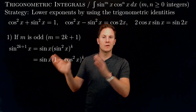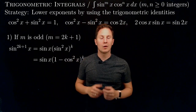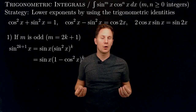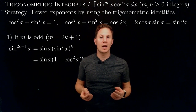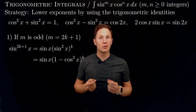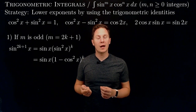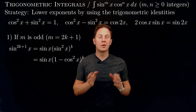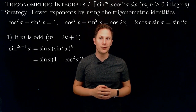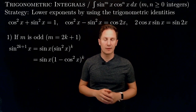Sin squared of x we can express using the identity as (1 minus cos squared x) to the k-th power. When we substitute that back into the integral, we end up with a polynomial in cos(x) times sin(x) dx. So substituting u equals cos(x) will turn that integral into a polynomial in u, which we know how to integrate.